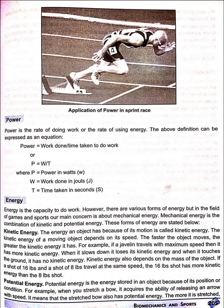Kinetic energy is the energy an object has because of its motion. The kinetic energy of a moving body depends on its speed. The faster the object moves, the greater the kinetic energy it has. For example, if a javelin travels at maximum speed, it has more kinetic energy. When it slows down, it loses its kinetic energy, and when it touches the ground, it has no kinetic energy.